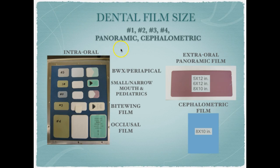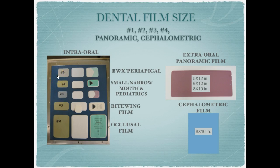Dental film size is assigned a number: either number one, number two, number three, number four, the panoramic film size, or the cephalometric film size. For intraoral films, we have the number two film, which is used for bite wing images and periapical images. You could also use a number two film for a child — maybe an eight-year-old up to a twelve-year-old — for a bite wing, depending on the size of their mouth. Then we have a number one film and a zero film, which are quite a bit smaller than the number two film.